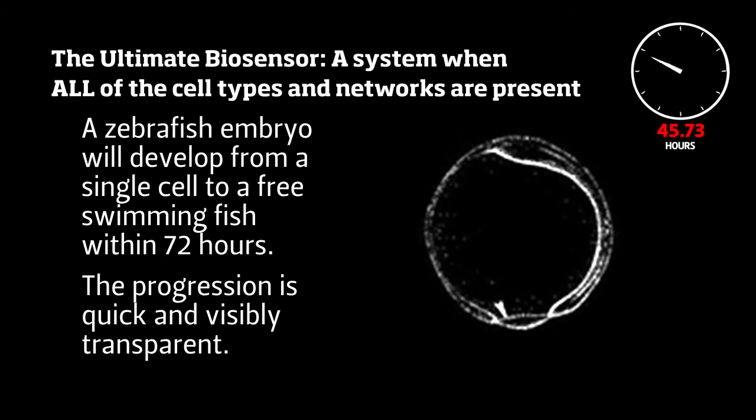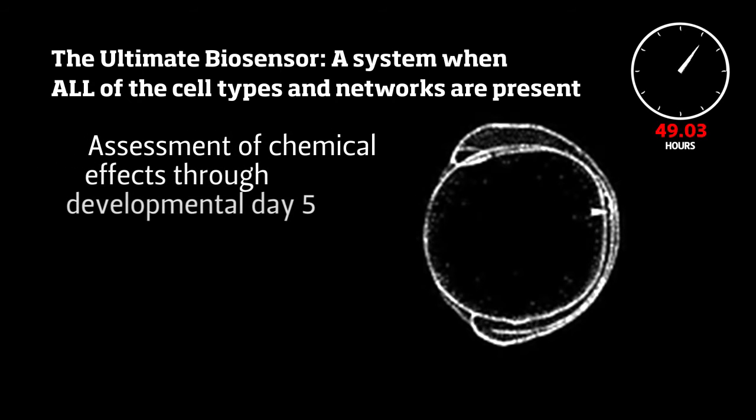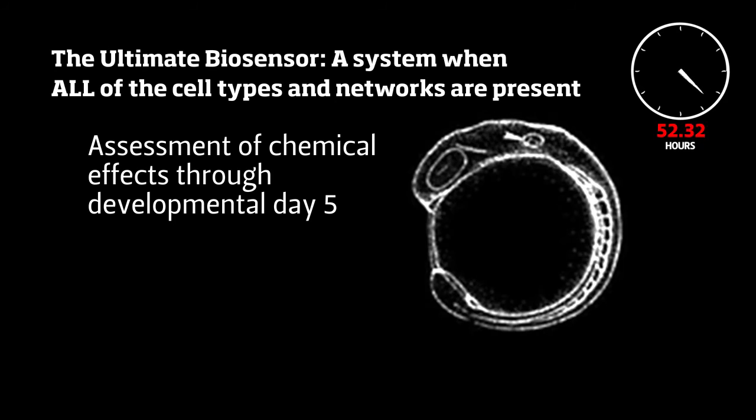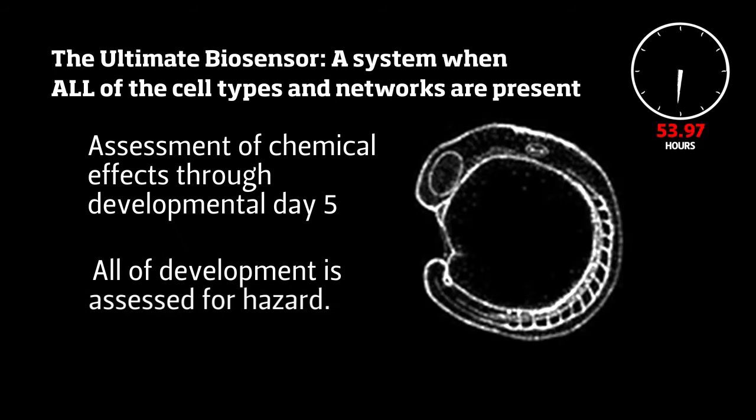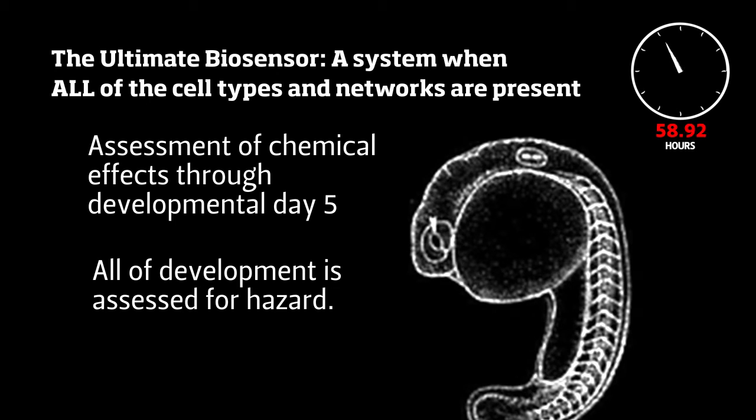Using microscopes, researchers can easily see if normal processes of development are disrupted by chemical exposures. During development, many molecular pathways or networks of molecules are sending information signals within and between cells that coordinate essential complex sequences of events.